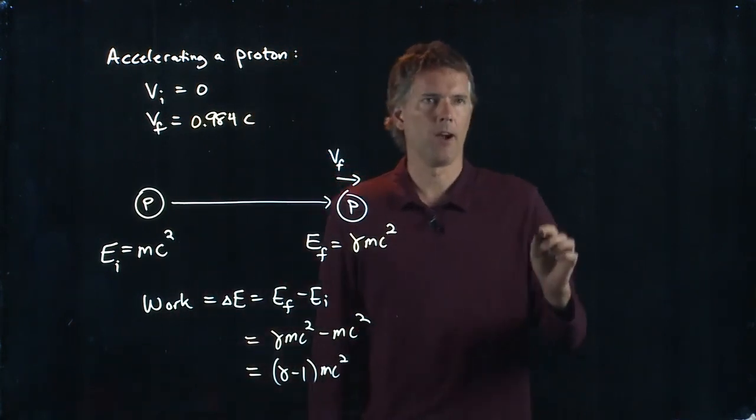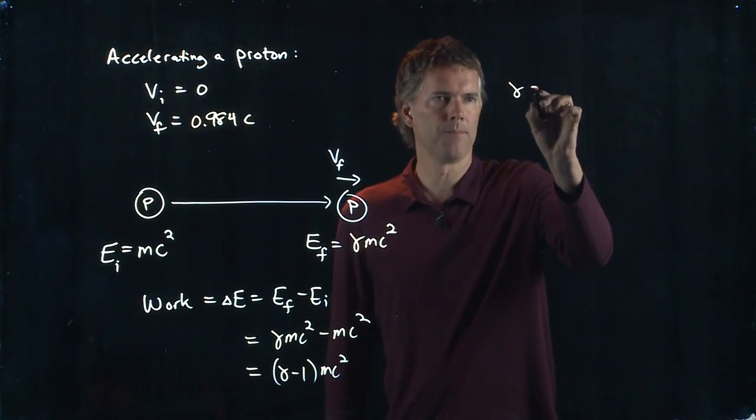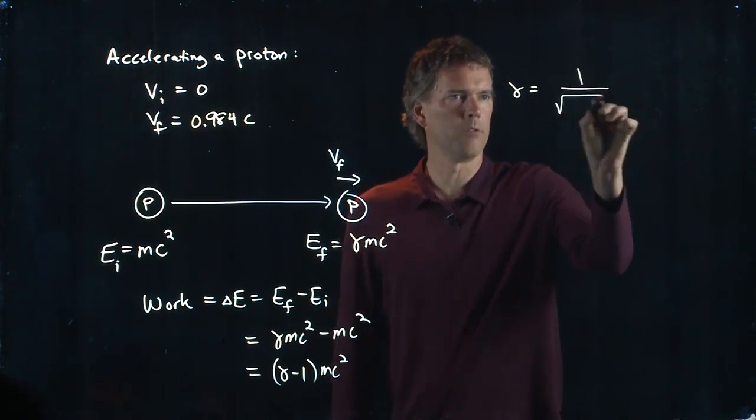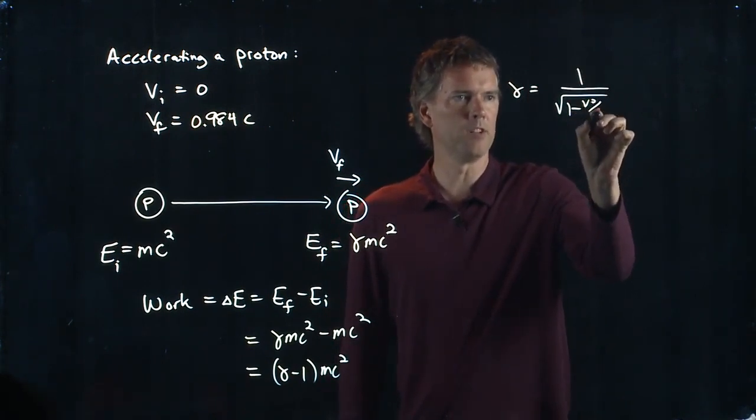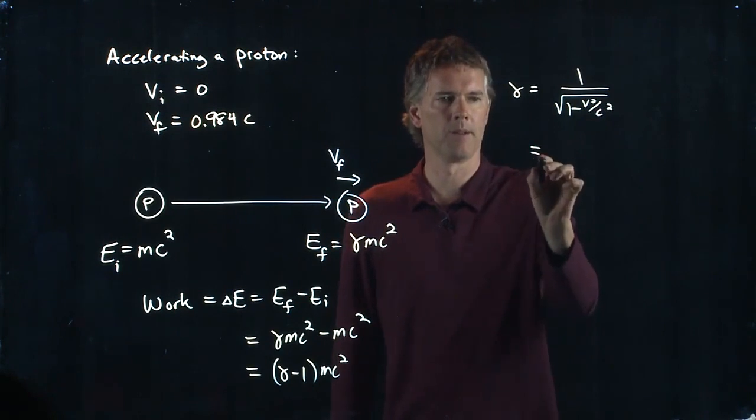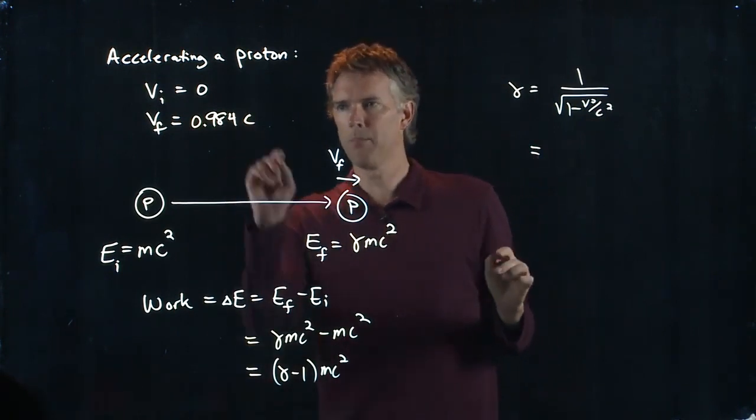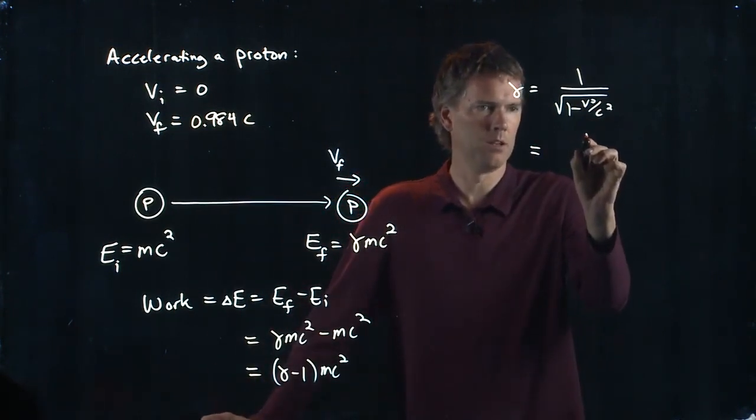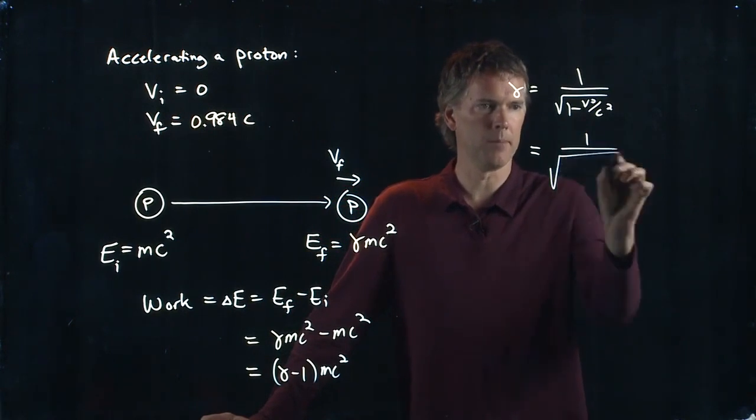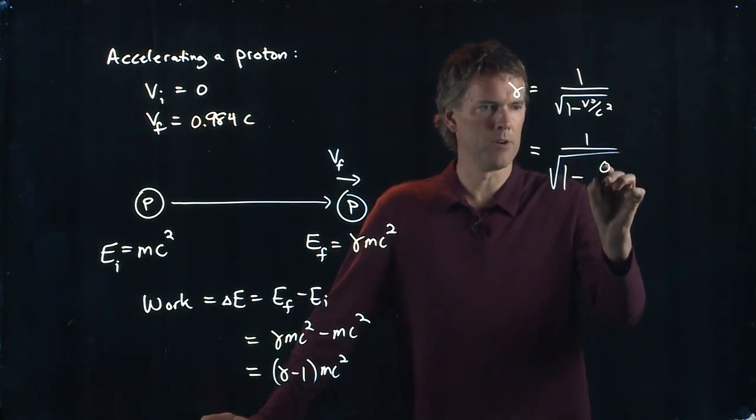So let's figure out what gamma is. Gamma is 1 over the square root, 1 minus V squared over C squared. And if we are moving at .984C, what do we get for our gamma?